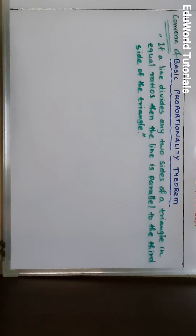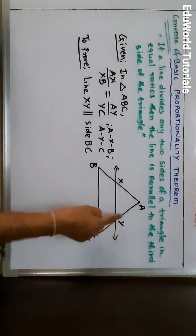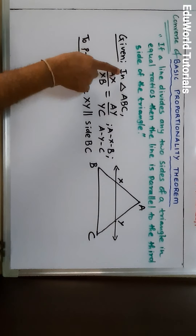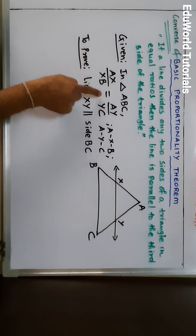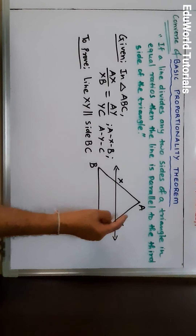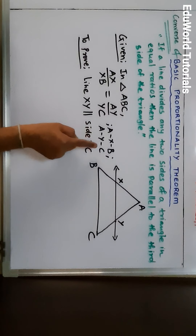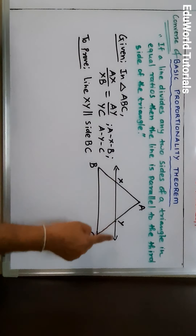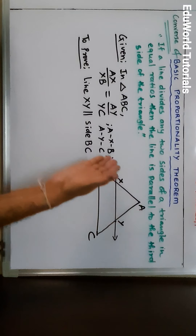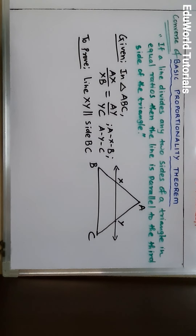Try to draw a diagram and understand. I have already drawn the diagram. In triangle ABC, line XY divides sides AB and AC in the same ratio — that is, AX upon XB is equal to AY upon YC, with A-X-B and A-Y-C betweenness. We have to prove that line XY is parallel to the third side BC. The third side is BC because the other two sides are already divided by the line.